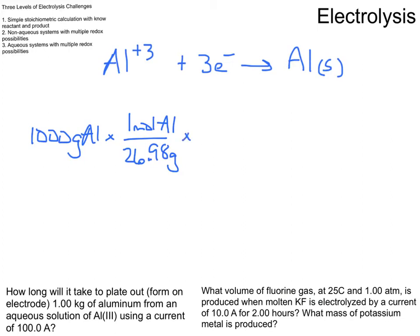In order to form a mole of aluminum, I need to consume three moles of electrons. So these stoichiometric calculations in electrolysis will always have a ratio of moles of electrons to moles of material you're trying to form or you're consuming. So for every mole of aluminum that I produce, I need to consume three moles of electrons.